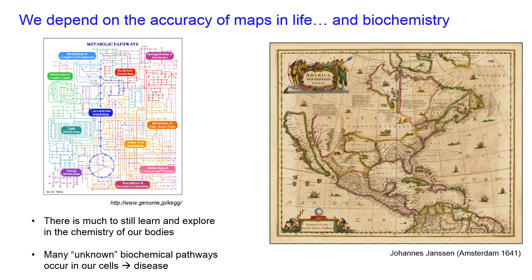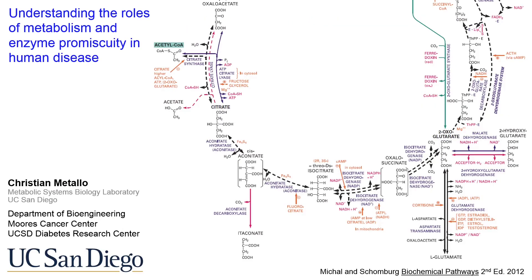Biochemistry is no different. We depend on metabolic maps to develop hypotheses and interpret our data. There is still much to explore about the chemistry of our bodies, and many unknowns exist, which can contribute to disease. My name is Christian Metallo, and my laboratory at UC San Diego aims to understand how metabolism and enzyme promiscuity contribute to human disease.